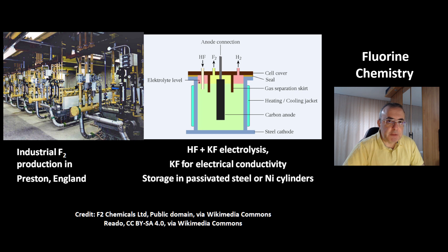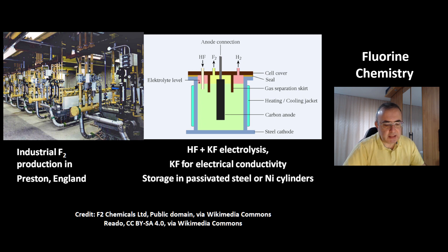On the left is a picture of industrial fluorine production in Preston, England. And on the right is how fluorine is made today — by electrolysis of hydrogen fluoride plus potassium fluoride. Potassium fluoride is used for electrical conductivity. Elemental fluorine can be stored in passivated steel or nickel cylinders.